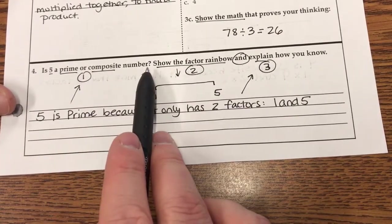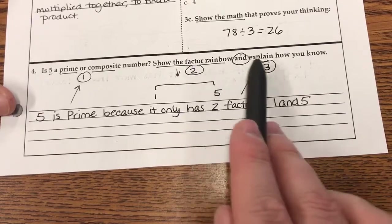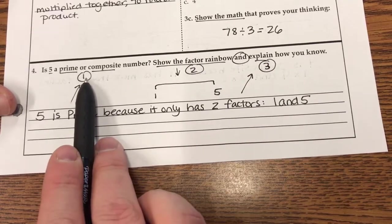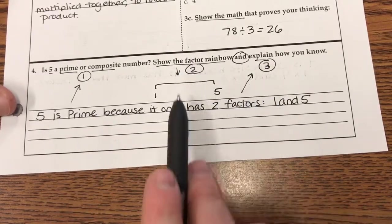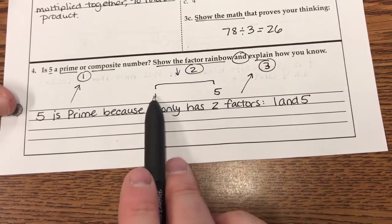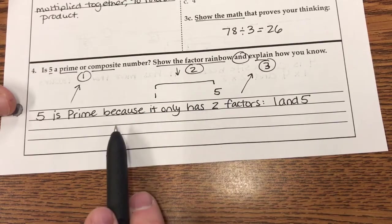Is 5 prime or composite? Show the factor rainbow and explain. So look, make sure you have these. Task 1, task 2, task 3. I want to show you what goes with what. So first, I actually did the factor rainbow, 1 and 5, 1 and that number.